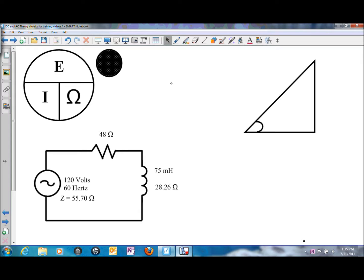In the last presentation, we solved for impedance in this circuit, which is the total opposition of current flow. With the impedance and the total voltage, we can use those two values and Ohm's law and solve for total current.